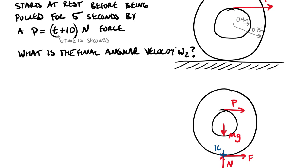Now we add the kinetic terms to the diagram. Since we're using the IC, we'll have an omega that is negative from the right-hand rule, and a velocity of the centroid, written as m*v-bar, which is horizontal. The reason we focus on velocities in the kinetic terms is that impulse-momentum is a velocity-based framework, as opposed to Newtonian kinetics which is acceleration-based.